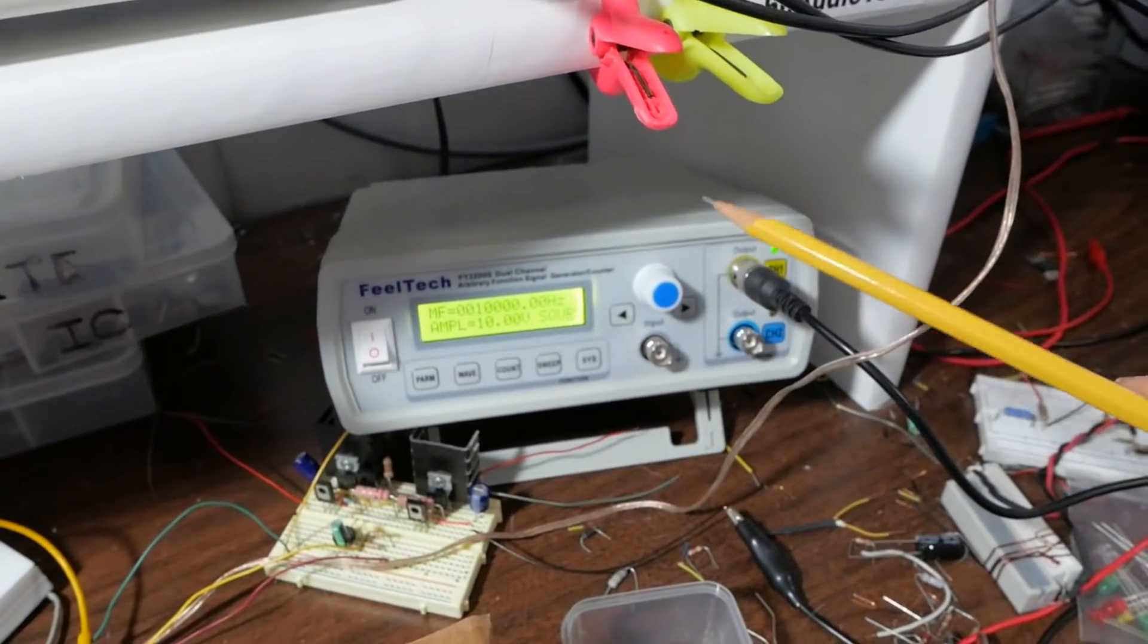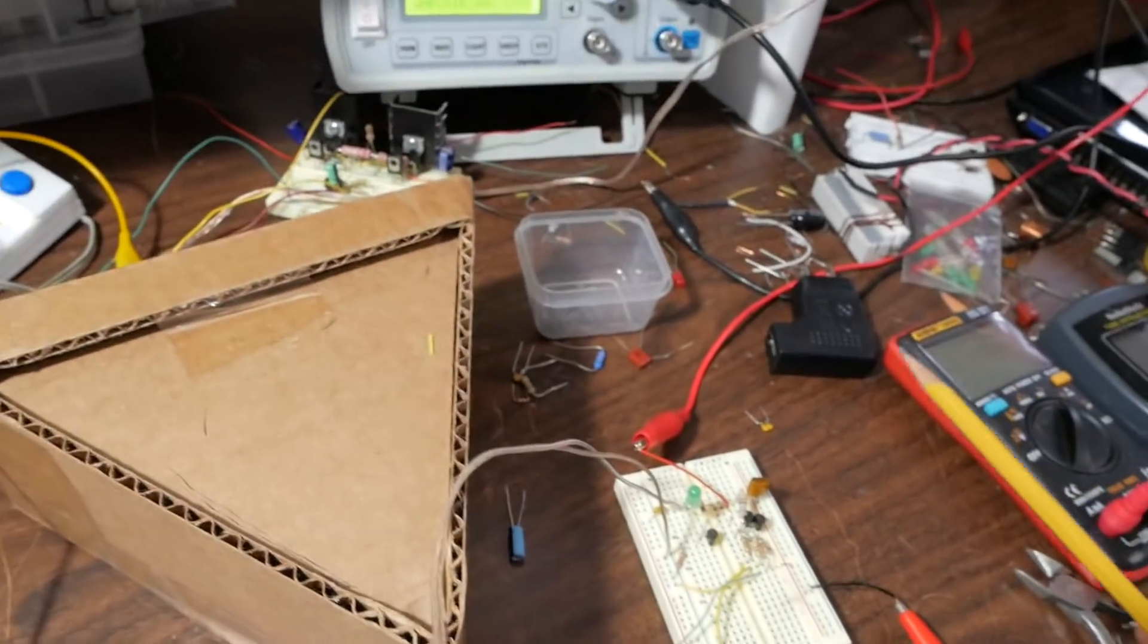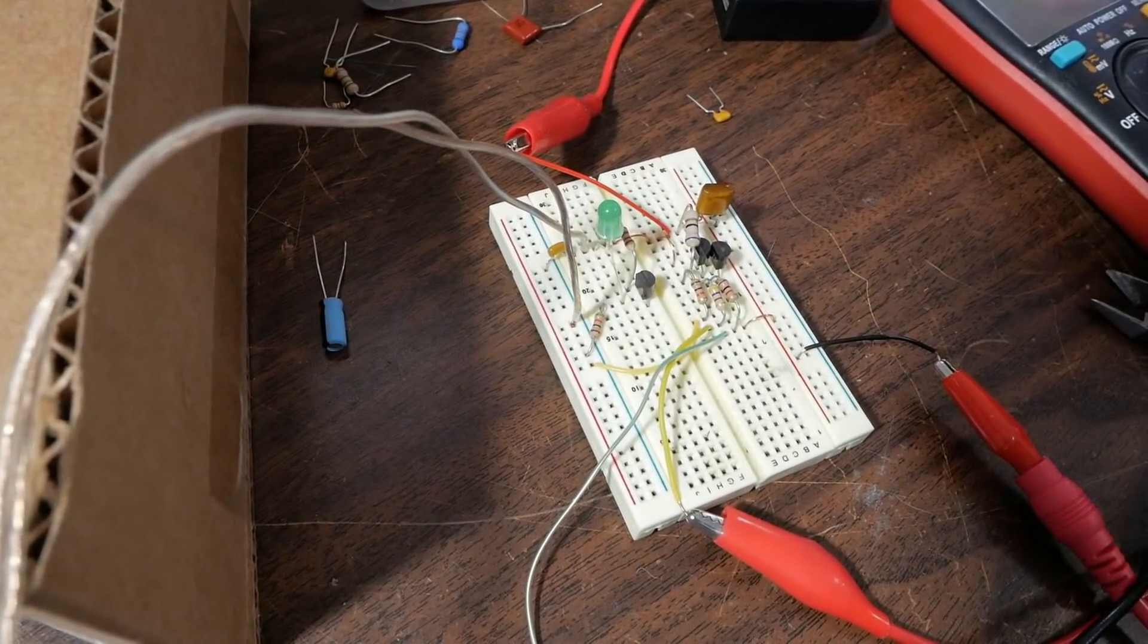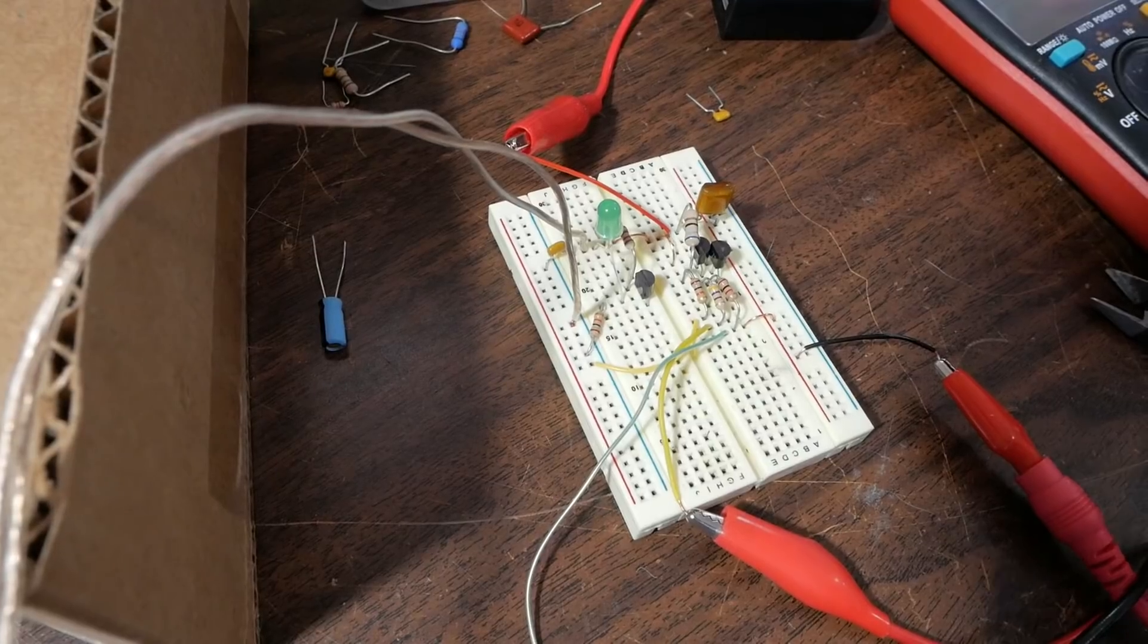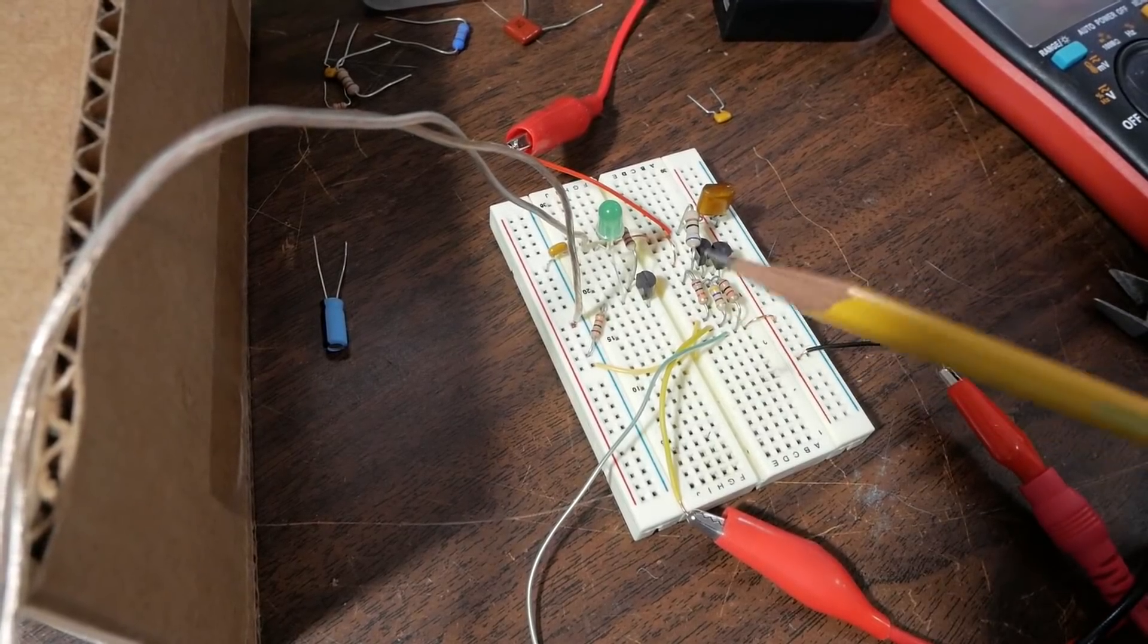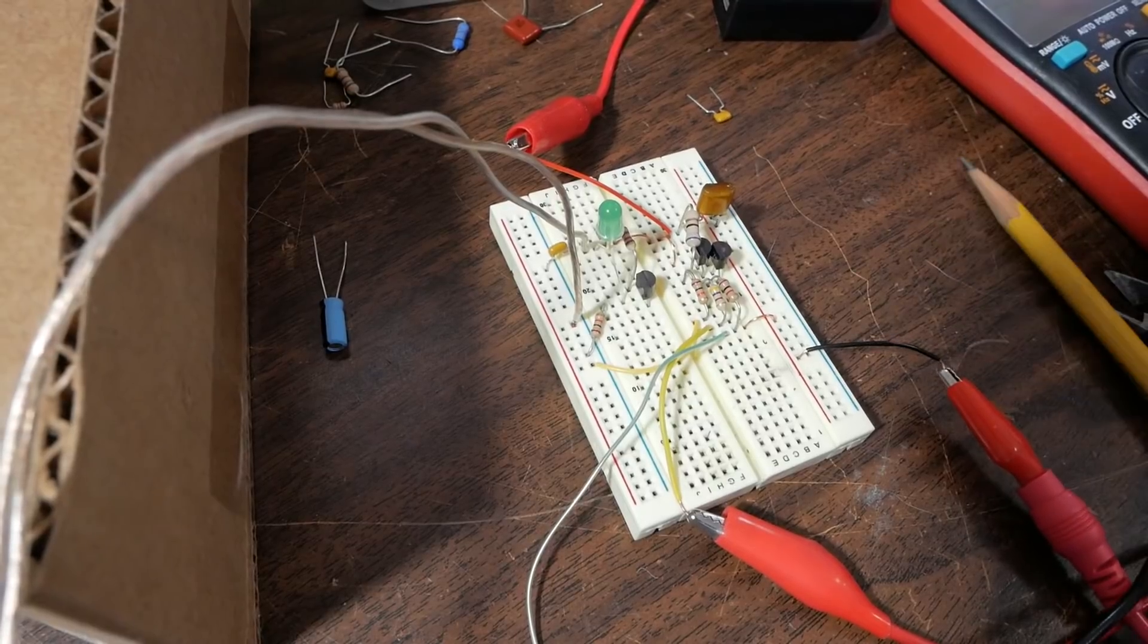I'm kind of limited here with this function generator. It doesn't have a large output. Most function generators don't have 60 or 70 volts of output, so I would have to create a circuit that would do that just to make sure that this circuit is going to be stable under those conditions.